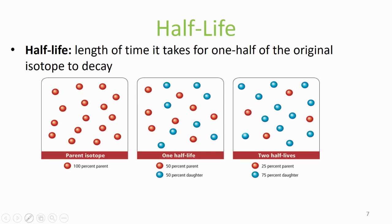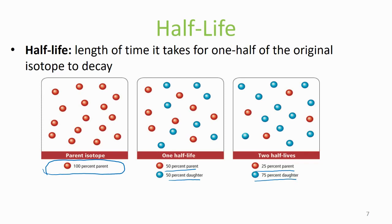A half-life is the length of time it takes for one half of the original isotope to decay. So at formation, the mineral has 100% of the parent isotope. After one half-life, there is 50% parent remaining and 50% daughter present. After two half-lives, there is 25% parent remaining and 75% daughter present.